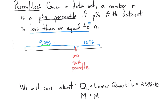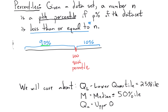We also care about the median. The median is, in fact, a percentile — because it splits the data exactly in half, which means 50% of the data is below the median, making it the 50th percentile. And the upper quartile, which we'll call Q_U, is the 75th percentile.